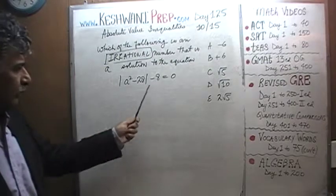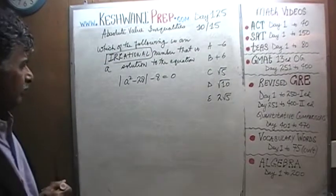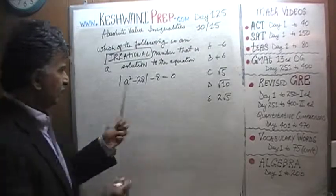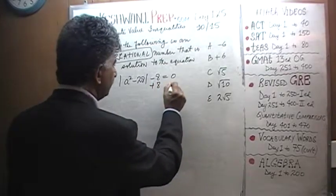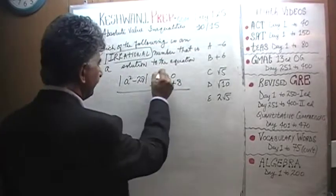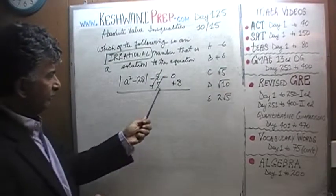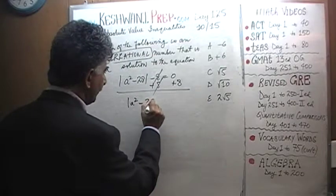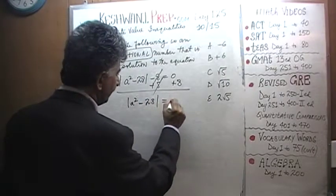All right, first thing first. In order for us to solve this equation, we have to first bring this 8 to the other side. We bring the 8 to the other side by adding 8 to both sides of the equation. The negative 8 cancels out the positive 8. What we find is that absolute value of a squared minus 28 has to equal 8.